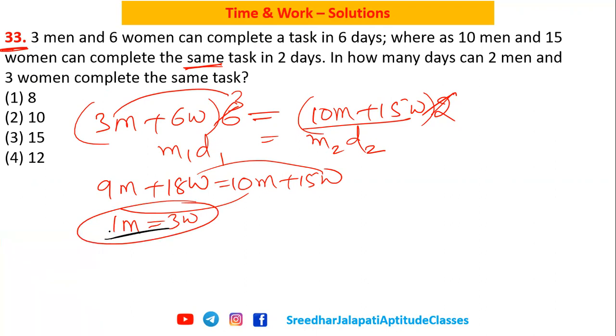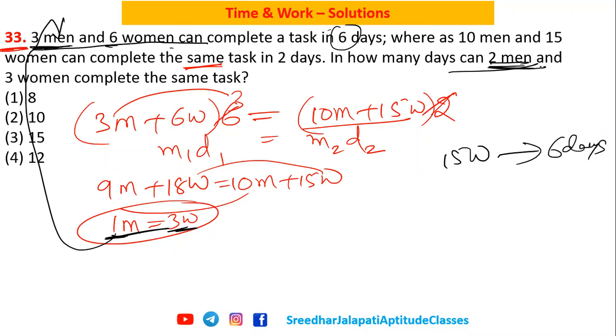Since we got one man equals three women, I can substitute back in any of the given information. As one man equals three women, if I substitute here, one man is three women, then three men is nine women, plus six is 15 women can do it in 6 days. Now we are asked to find how many days two men and three women take.